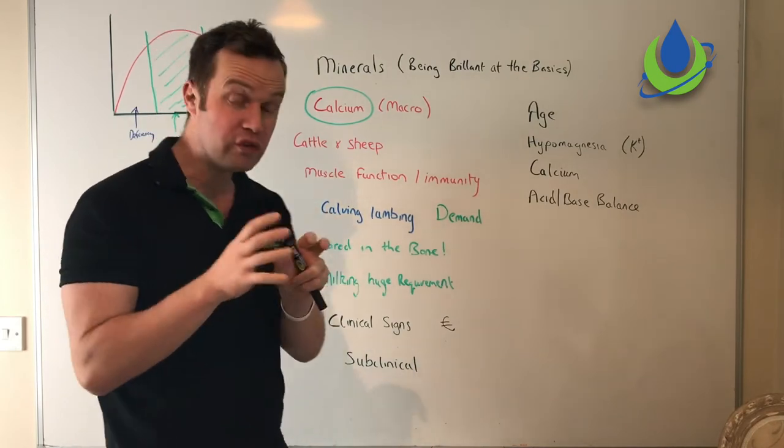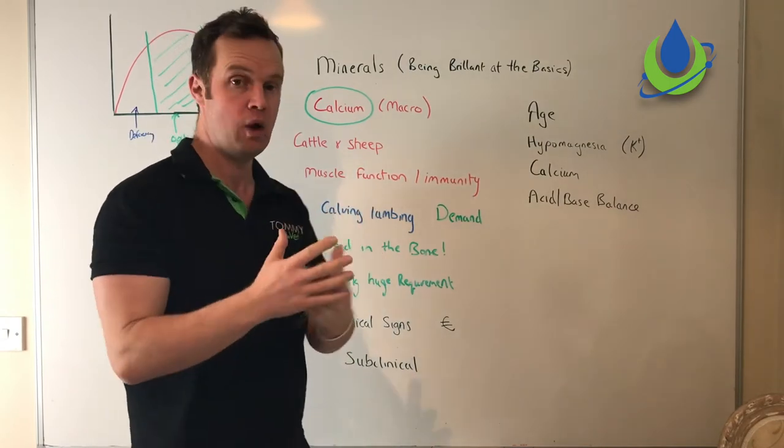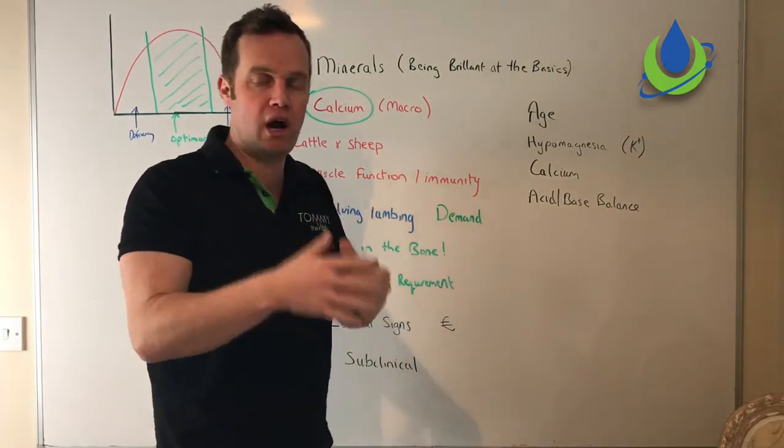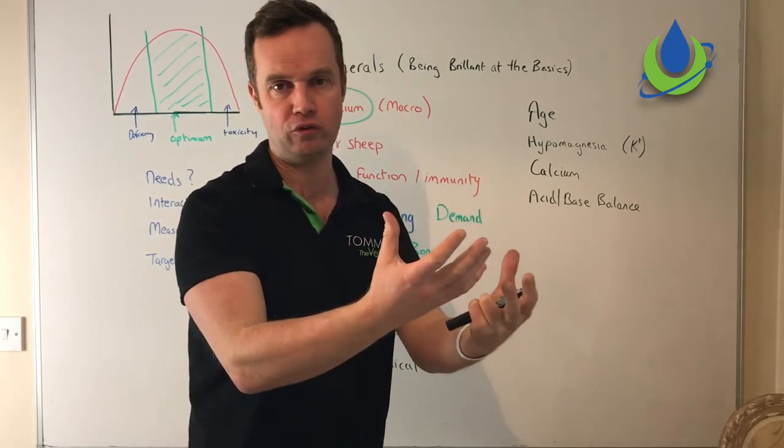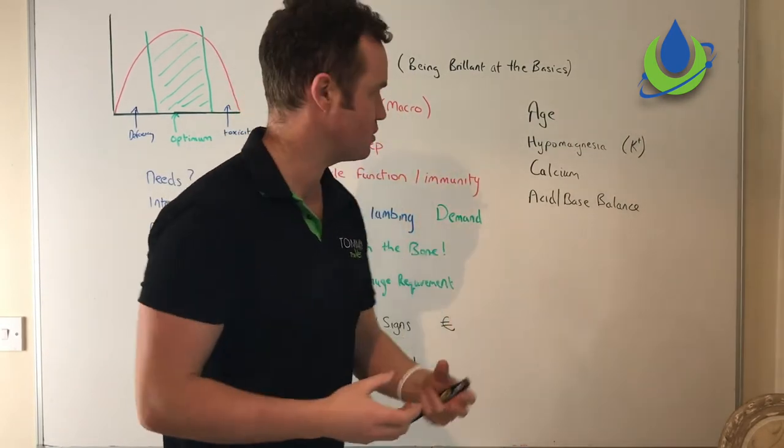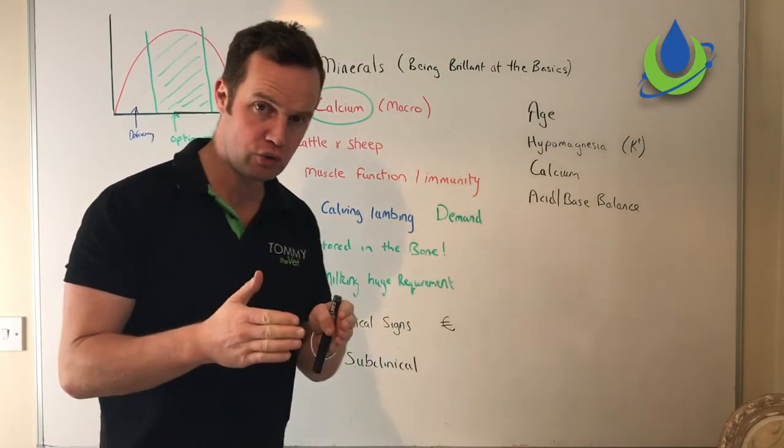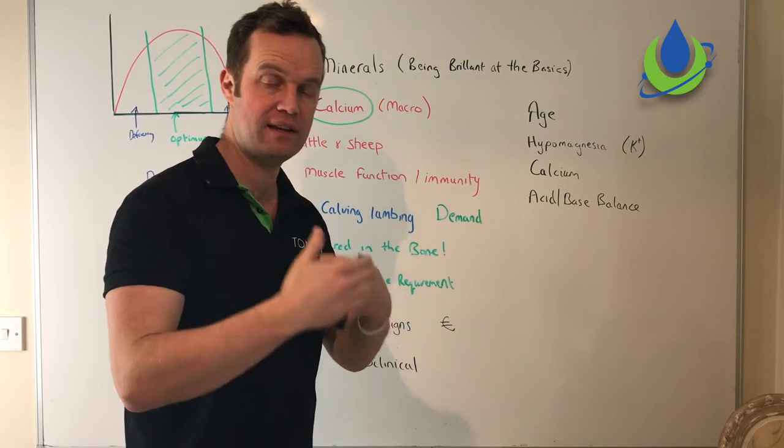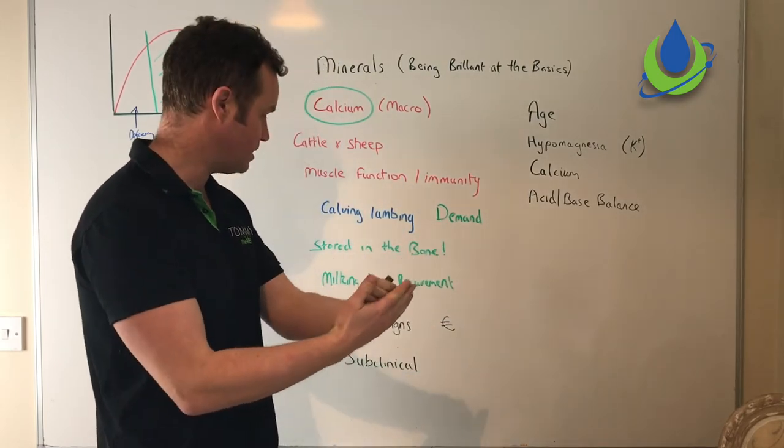Most of calcium is stored in bone, and that's important to remember because there's a complex mechanism with a number of interactions where the cow comes up to calving. She pushes calcium from her bone into her bloodstream to meet this demand, and there's a number of things that influence that. There's a huge requirement for calcium in lactating animals, particularly when they're adjusting their diet to meet demands.